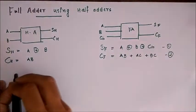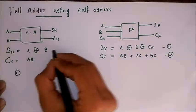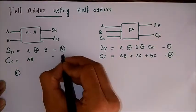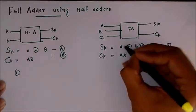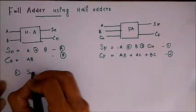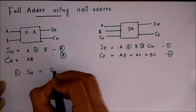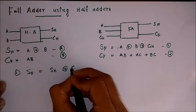Let me name this as equation 1 and equation 2. So equation 1, as you can see, it can be simply written as this is equation number A and equation number B. Here SH is A XOR B, that is this term.